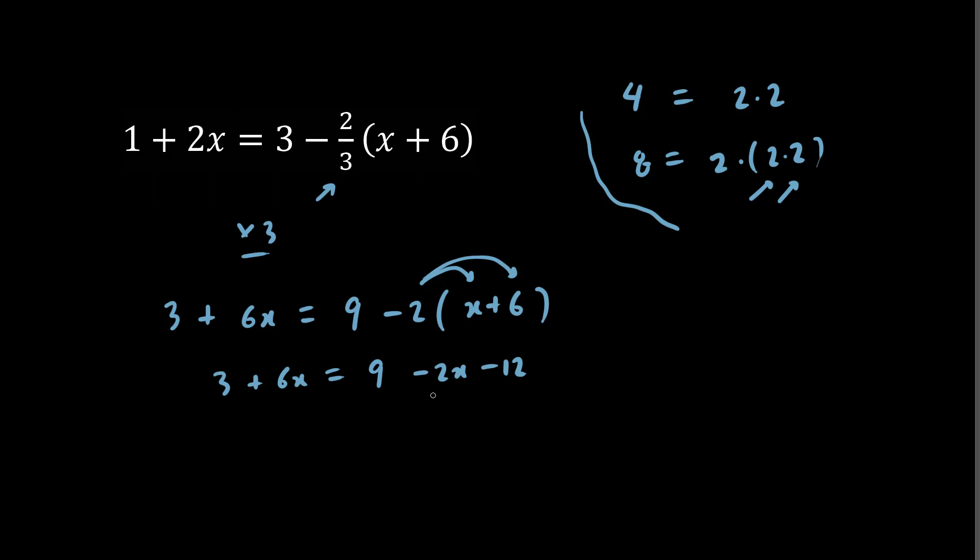We now gather like terms. Let's throw this negative 2x to the left of the equal sign. We have 6x plus 2x is 8x, and we have 9 minus 12 is negative 3. And we're going to throw this 3 over to the right, so we have another negative 3.